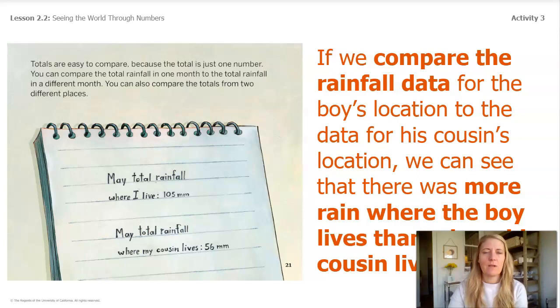If we compare the rainfall data for the boy's location to the data for his cousin's location, we can see that there was more rain where the boy lives than where his cousin lives.